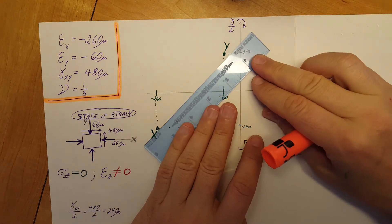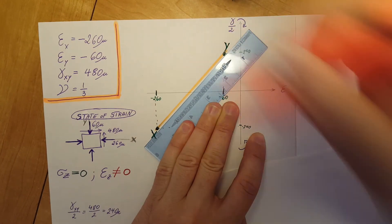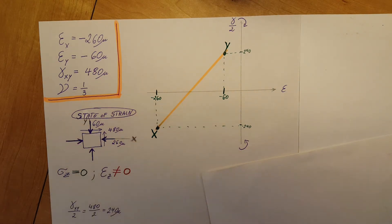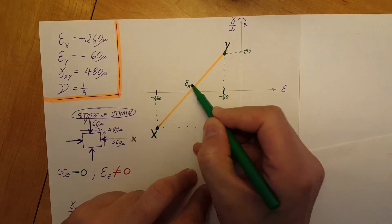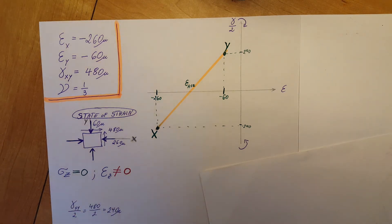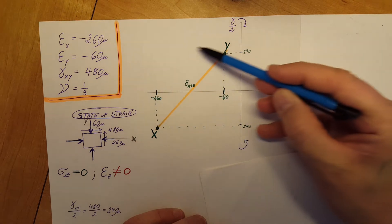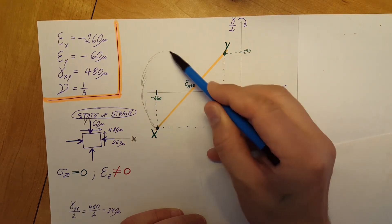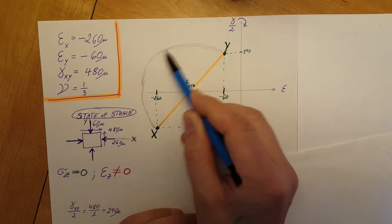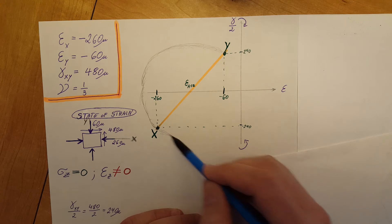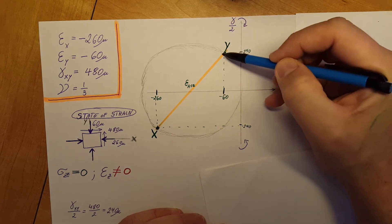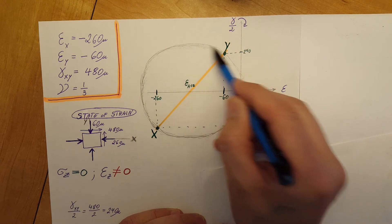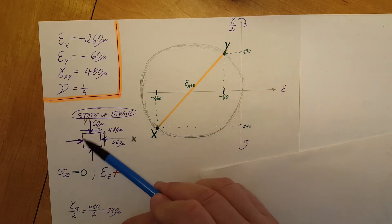The next step is to connect these two points — x and y. Where this line crosses the horizontal axis, that is our epsilon average. I will also roughly sketch in the circle these two points create. It's going to be a rough-looking circle, but that is our Mohr's circle showing our initial state of strain with the x and y locations.